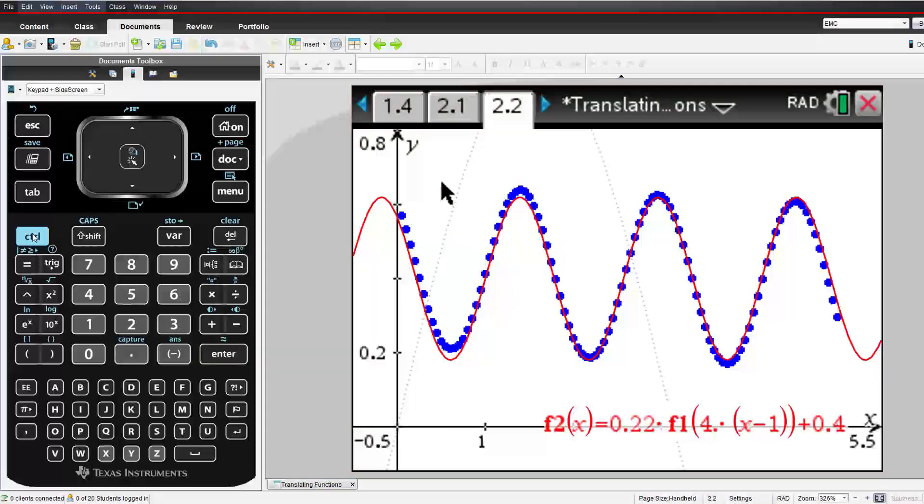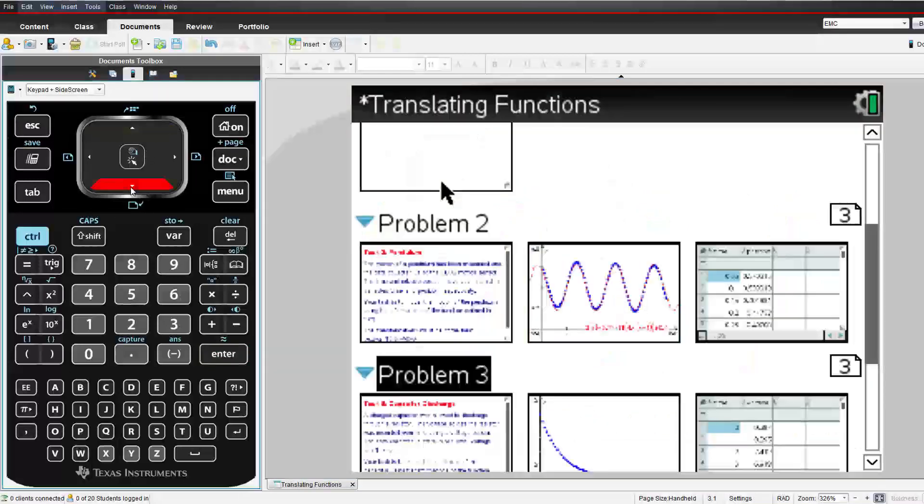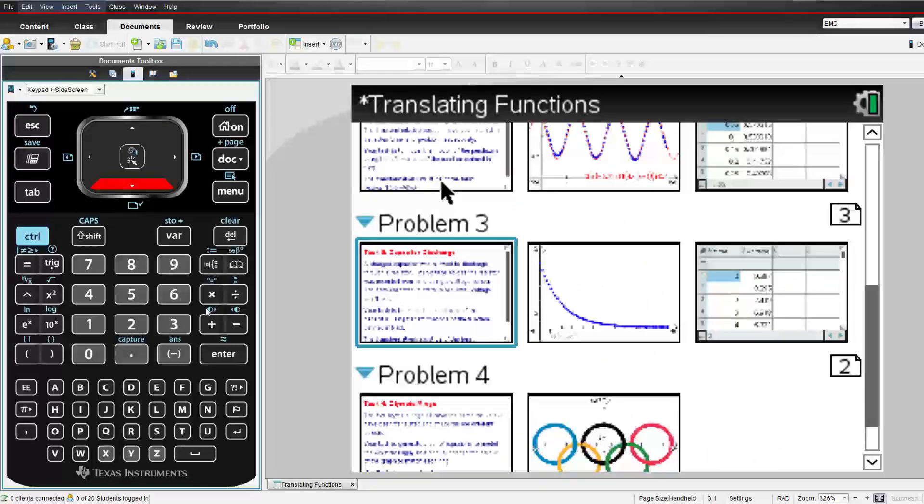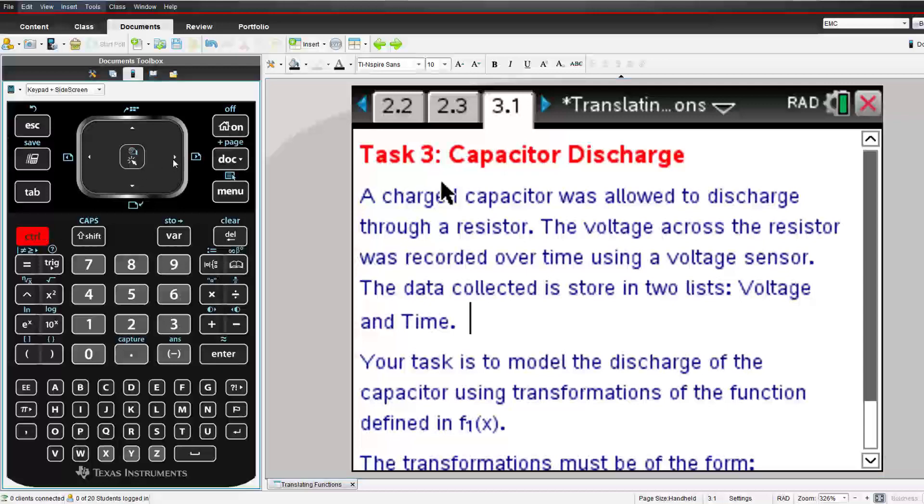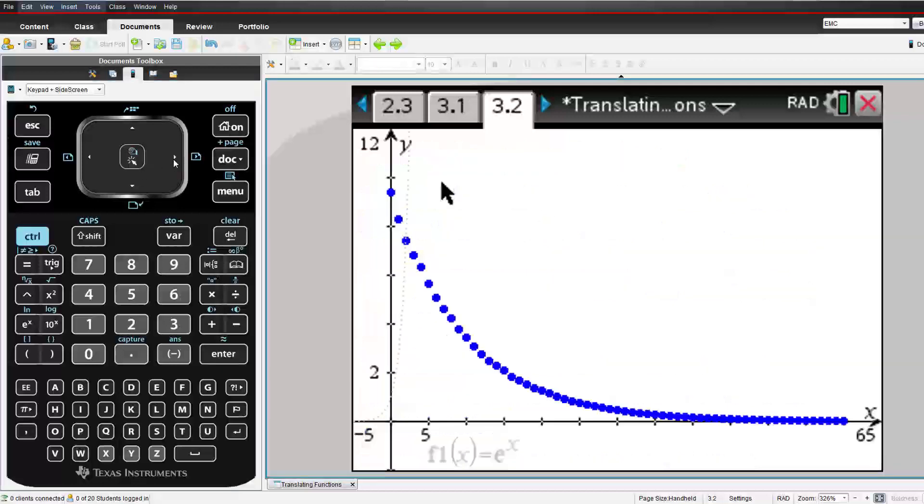Once the students are happy enough with their model, they move on to problem 3. In problem 3 we're looking at data collected from the discharge of a capacitor. This happens in a sort of an exponential form, so we can see a basic e to the x function.